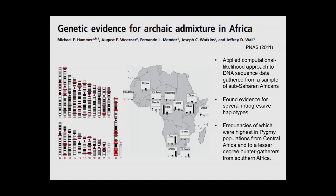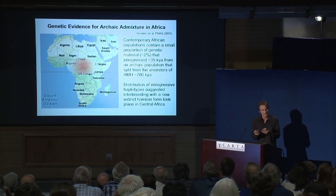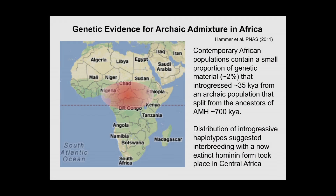We applied our approach to sequence data gathered from a range of African populations. We found evidence for several introgressive haplotypes in different parts of Africa, but frequencies were highest in the pygmy populations from Central Africa. Using extensive computer simulations, we first showed the data were not consistent with a model of no admixture — rejecting that null model. Using a likelihood approach, we estimated that contemporary African populations contain approximately 2% genetic material from an archaic form that introgressed approximately 35,000 to 40,000 years ago from a group that split perhaps as long ago as 700,000 years, with interbreeding likely centered somewhere in Central Africa.